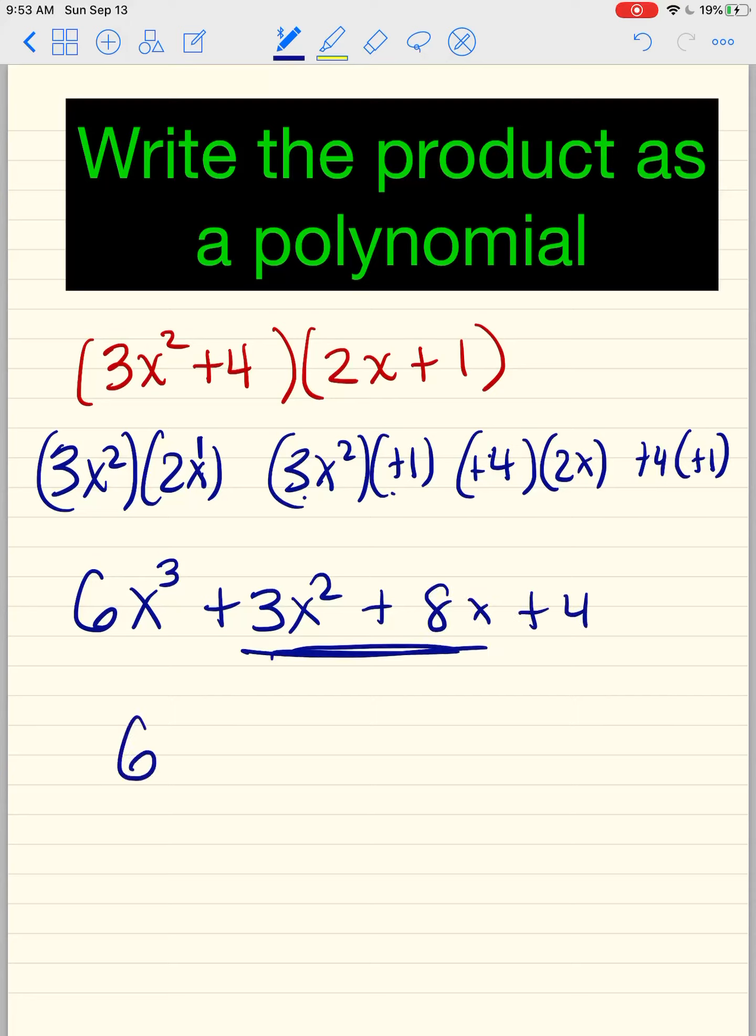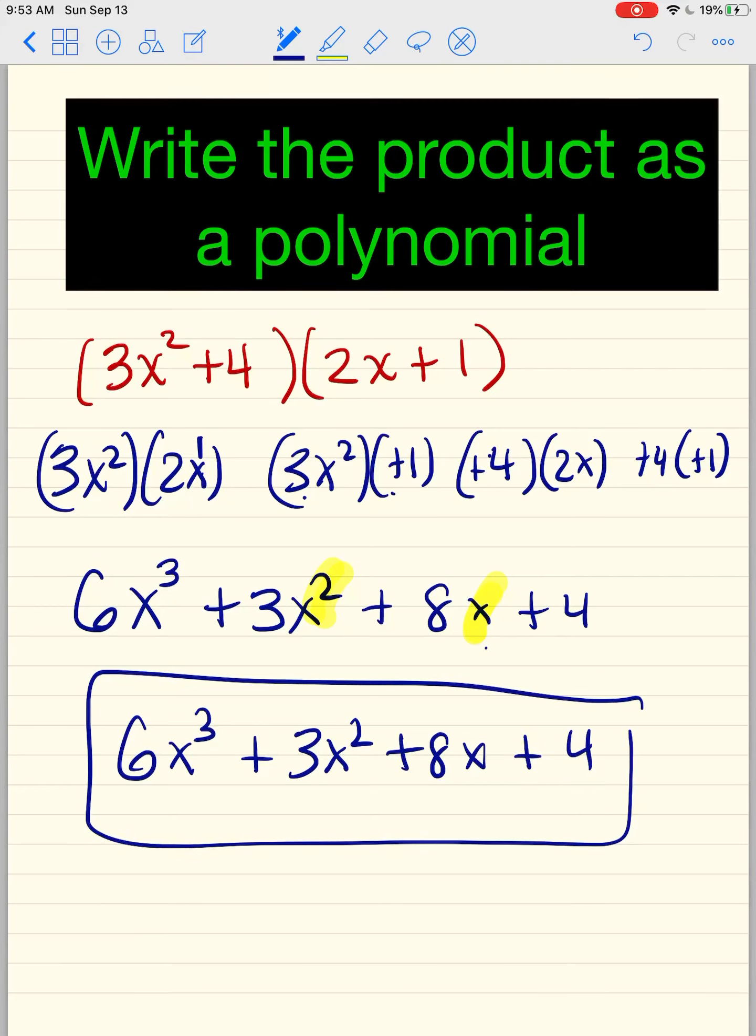And we put these together and we get 6x³ plus, sorry, this should be, did I miss, oh yeah, pardon me. This one you cannot put together. You can't put the 3x² and the 8x together. They don't match perfectly. You got to be very careful. So 3x² + 8x + 4 is your final answer. It's a polynomial. And the degree is actually 3. Degree is always the highest.